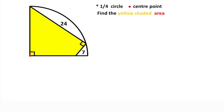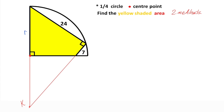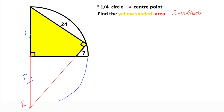This was the first method. Now we will calculate the yellow shaded area using a second method. First of all, notice that here is 90 degrees. That means if we extend these two sides like this and call this point K, if here is 90 degrees, then this side is also a radius. So let's call it r, meaning this length must equal r units. Therefore, if we complete the quarter circle to a half circle, the arc will pass through point K.